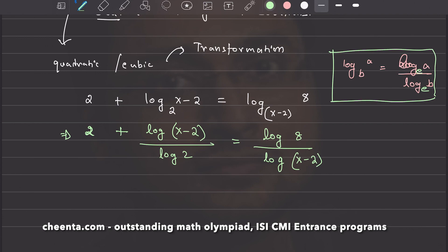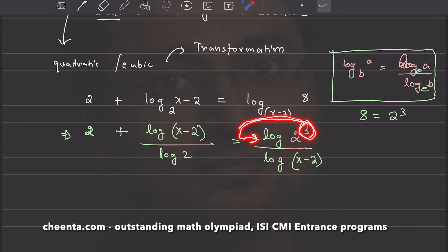This implies 2 plus log of x minus 2 divided by log 2, equals to log 8 by log of x minus 2. Now, of course, 8 is 2 cubed. So, I can change this 8 into 2 cubed. Let's rewrite it as 2 cubed. And we can bring this exponent to the front. That's a standard formula for logarithm.